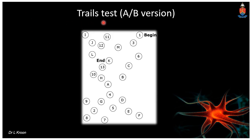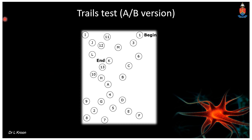The trail making test forms part of executive functioning assessment. You start with a number and alternate with a letter — linking 1 to A, then 2 to B, then 3 to C, and so on. The MOCA examination typically incorporates this test and is considered a better screen than the mini mental state examination. Trying it post-call can demonstrate how executive functioning becomes disordered with fatigue.